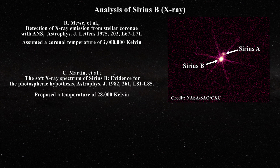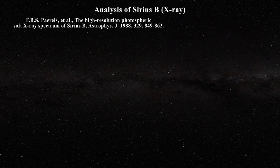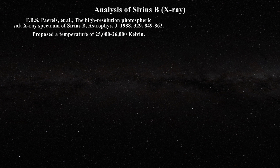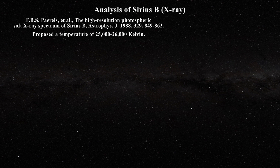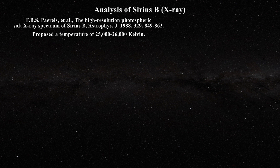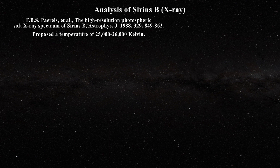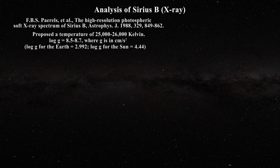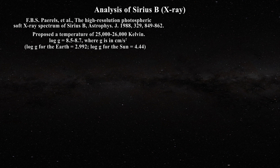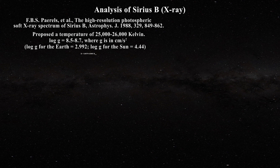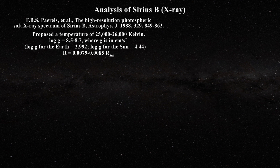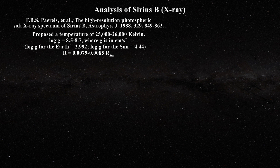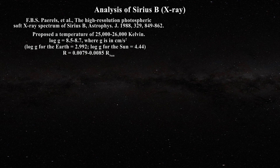A few years later, Perel et al. would analyze the soft x-ray spectrum in the range of 50 to 200 angstroms and obtain a dramatically different temperature of 25,000 to 26,000 Kelvin using a theoretical model for flux in the white dwarf. They would also calculate a log of the surface gravity log g equals 8.5 to 8.7, where g is in meters per second squared, and a radius r equals 0.0079 to 0.0085 of the radius of the sun, from the calculated flux and measured parallax for the star.